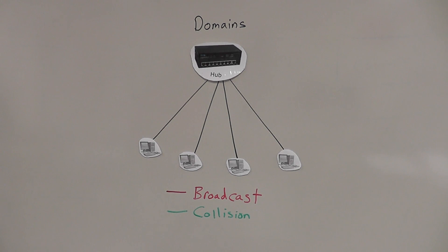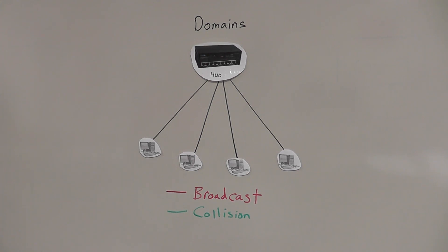With a hub — and it doesn't matter if it's 10 Base-T or 100 Base-T, there are even some 1000 Base-T hubs — you have to consider the size of your broadcast domain and the size of your collision domains. You have to do that for any kind of network, because as an administrator, as an IT professional, controlling the sizes of those domains is everything. When you control the size of the domain, you control the performance of the network.